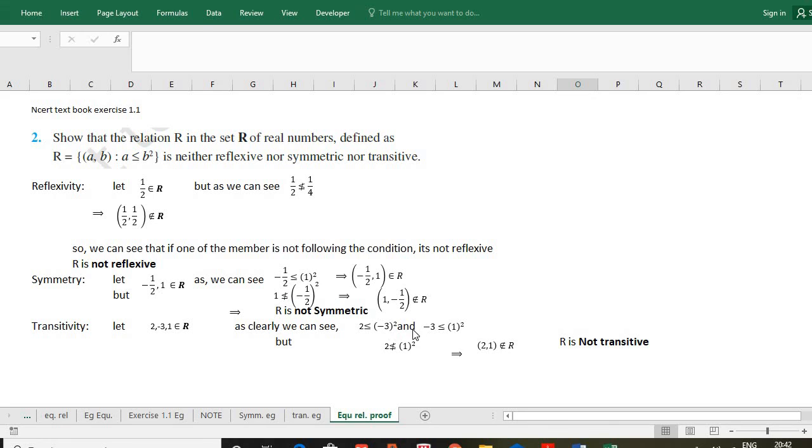And -3 and 1 are also connected. I have taken -3 and 1 as an example. So -3 is definitely less than or equal to 1². But we can see that 2 is not less than or equal to 1². So A and B were connected, B and C were connected, but A and C is not connected here. So we say (A,C) does not belong to R. It means R is not transitive.